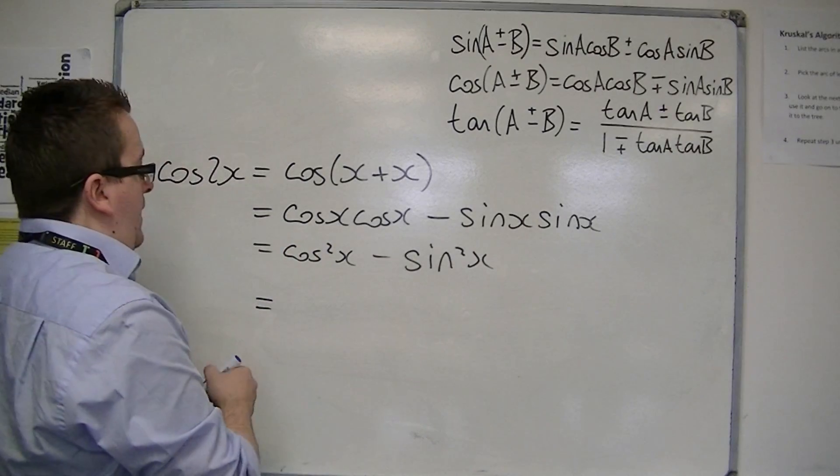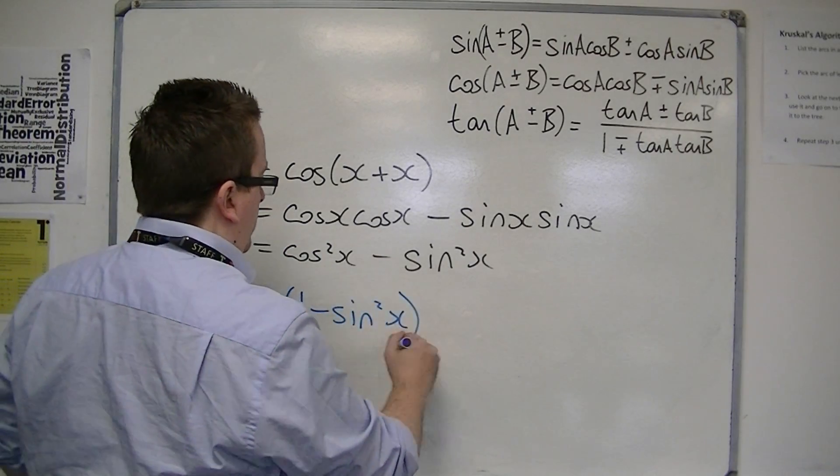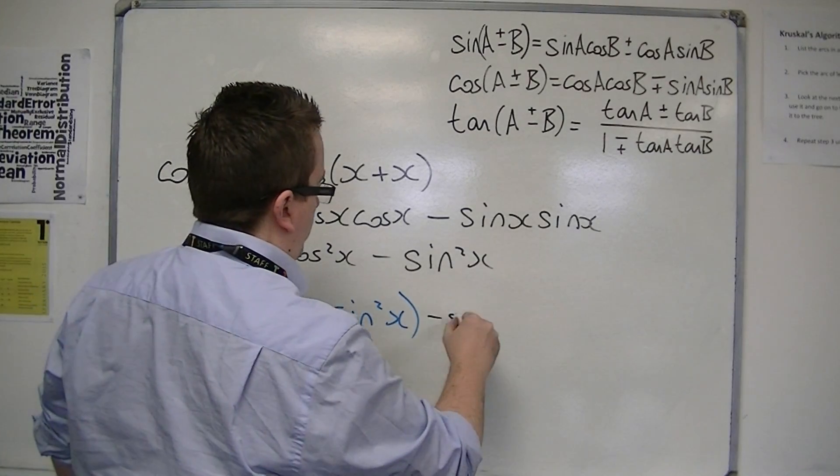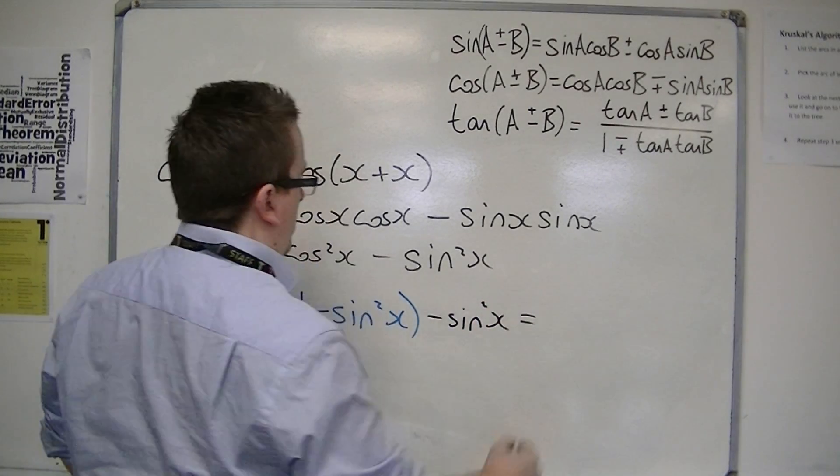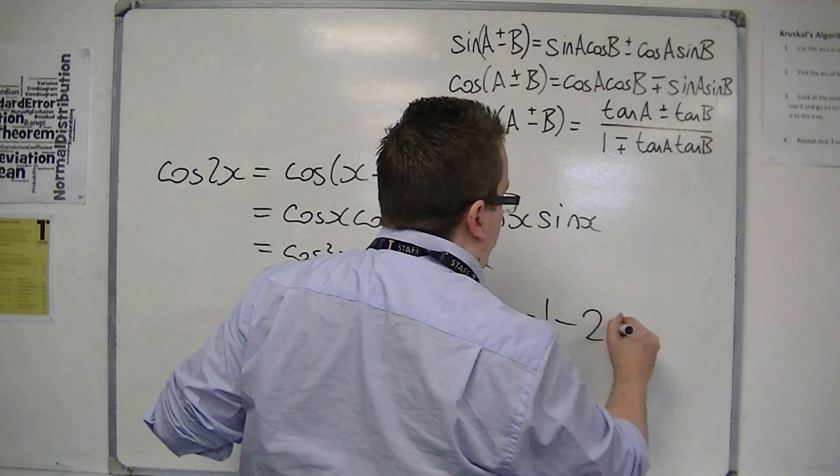So cos squared is 1 minus sin squared. So 1 minus sin squared take away sin squared is 1 minus 2 sin squared.